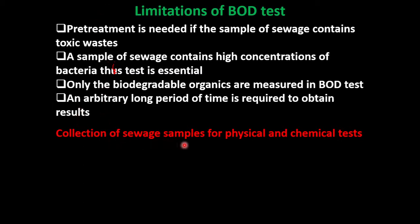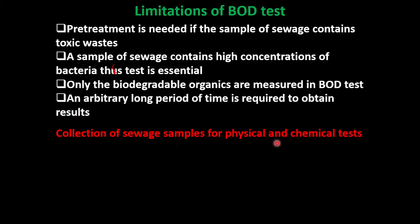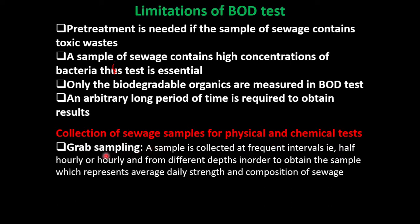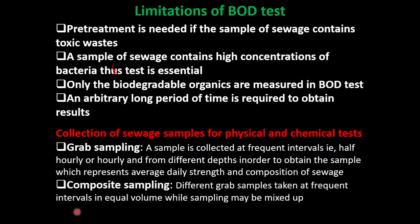For collection of wastewater samples for physical and chemical testing, there are two types of sampling: grab sampling and composite sampling. A grab sample is collected at frequent intervals — half-hourly or hourly — and from different depths, in order to obtain a sample representing the average daily strength and composition of the wastewater.